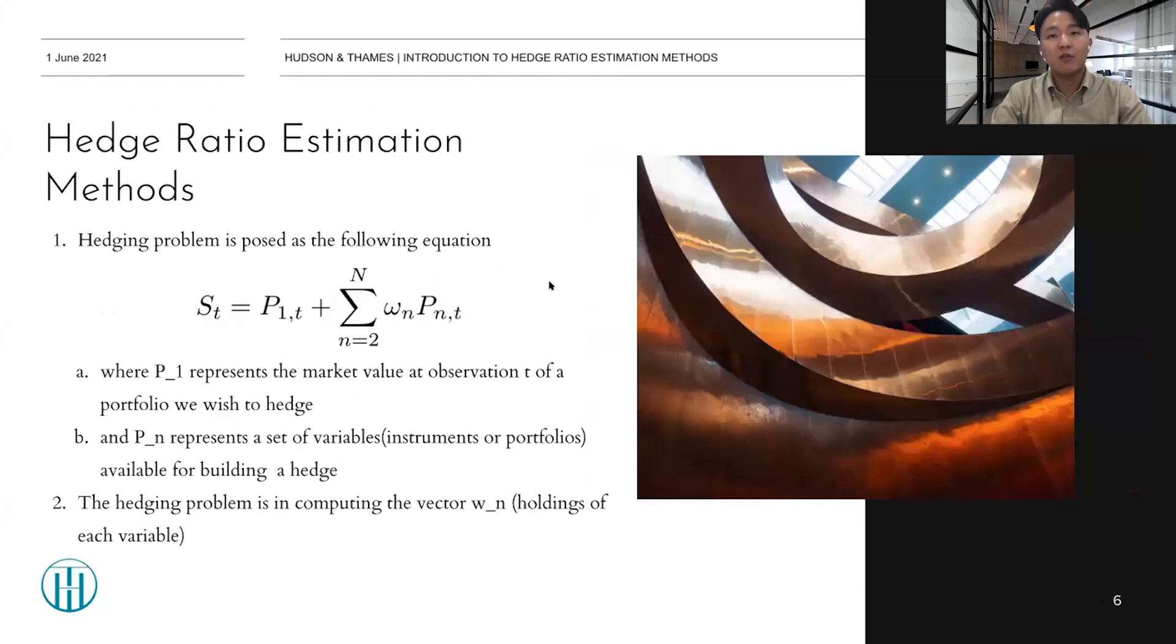Okay, let's see the key concepts of the hedge ratio estimation first. The hedging problem is posed as the following equation in the slide. Here, the P1 represents the market value at observation T of a portfolio we wish to hedge. And Pn represents a set of variables which are instruments or portfolios available for building a hedge. And the hedging problem is in computing the vector Wn, which is holdings of each variable. And in this context, you may use either stocks or portfolios for the variable P. However, here, I'll use the word portfolio for the rest of the slide.